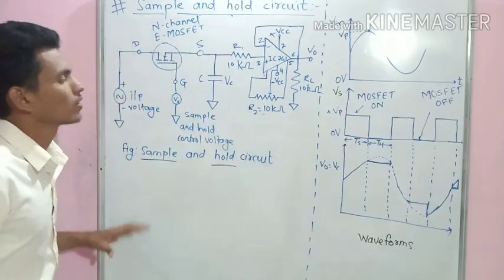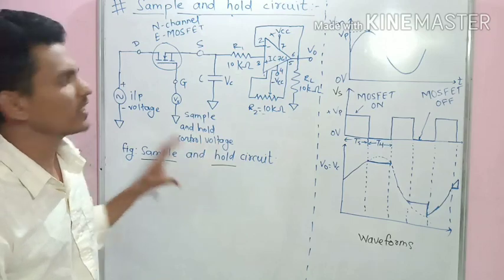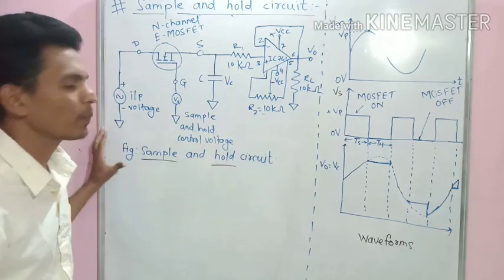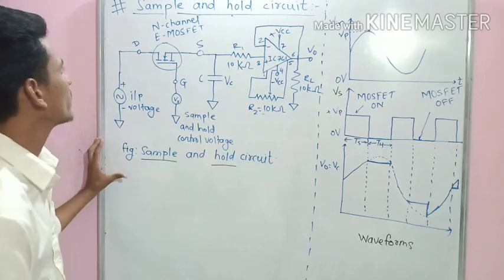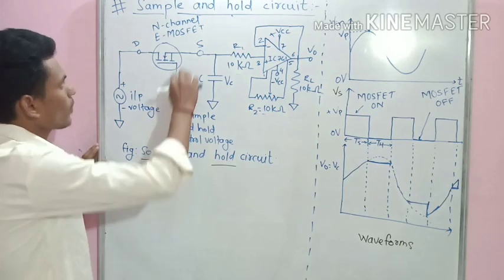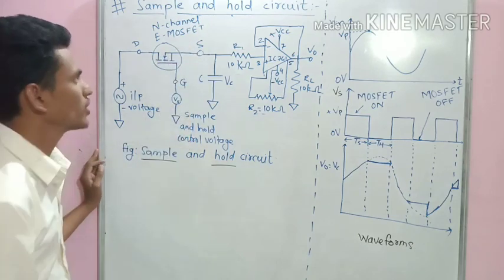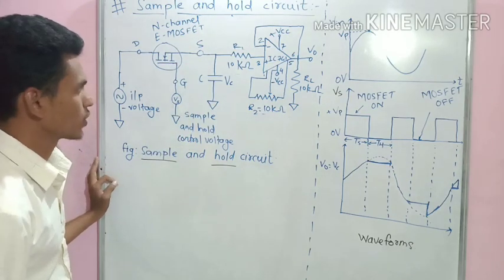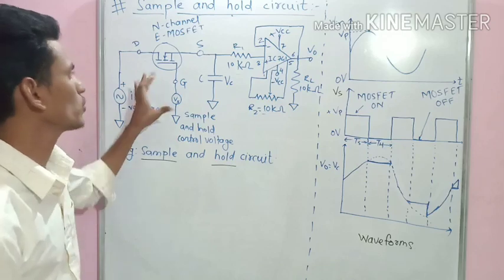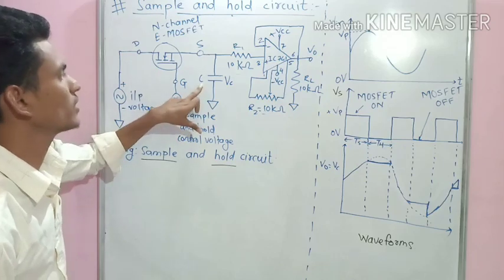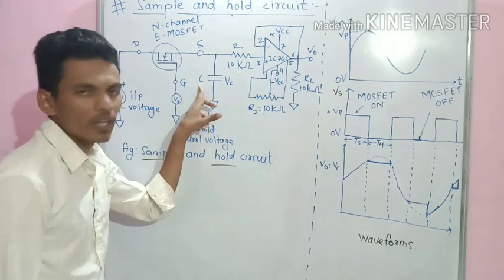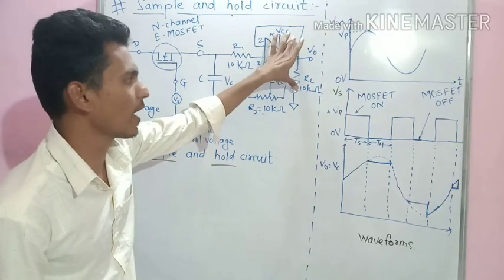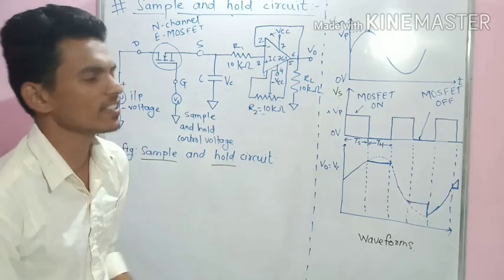First of all we know about the design of this sample and hold circuit. It consists of an N-channel enhancement MOSFET which works as a switch, a capacitor for the storage of charge, and an operational amplifier which is an IC.